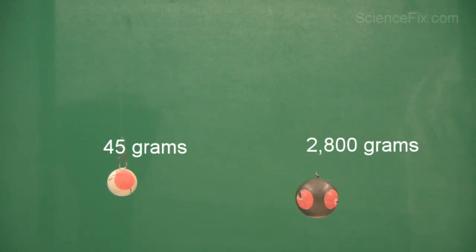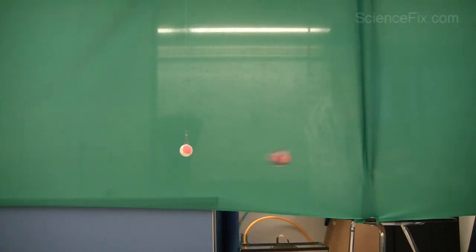The more mass an object has, the greater its inertia. Inertia is the tendency of an object to resist a change in motion. So the inertia of the lead fishing weight is much greater than the golf ball.